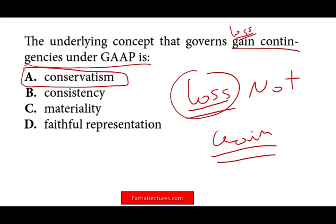You also need to know what consistency is — using the same principles from period to period. Materiality is entity-specific; we don't assign a universal number to it. Each company has a different size, balance sheet, and income statement. Whether you overreport or underreport a number depends on your entity's size and circumstances, considering both quantitative and qualitative factors. Materiality does not govern gain contingencies. Faithful representation is a fundamental quality. Conservatism deals with gain contingencies.